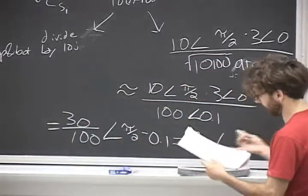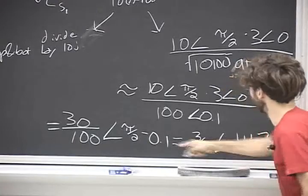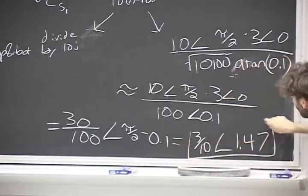And at this point you would end up calculating it, because pi over 2 and 0.1 don't play nice. So you end up getting this. Okay, right?